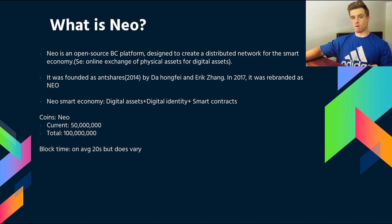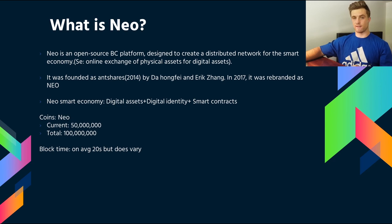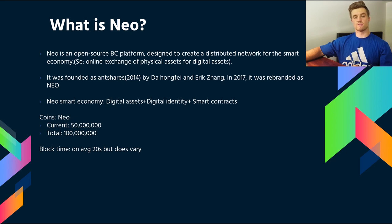The NEO smart economy is defined as digital assets plus a digital identity plus smart contracts. In terms of the coins with NEO, we currently have 50 million in supply, which were distributed during an ICO, and the total supply is 100 million. The block time for NEO is quite quick — on average about 20 seconds, but it does vary a couple of seconds either way.